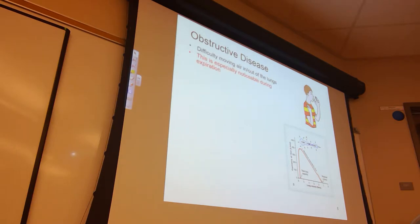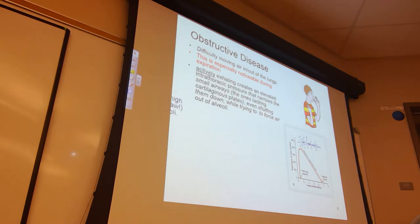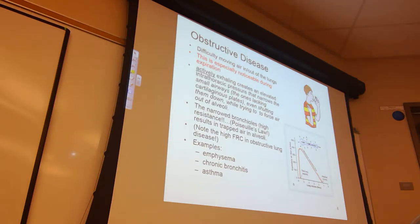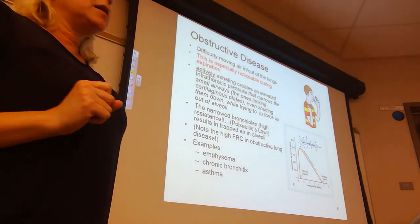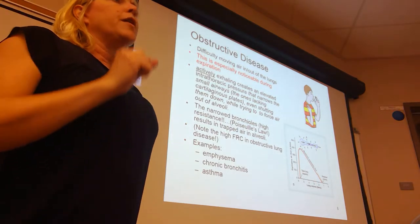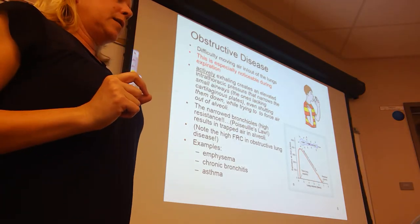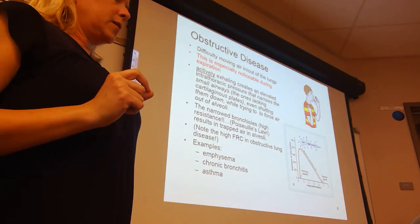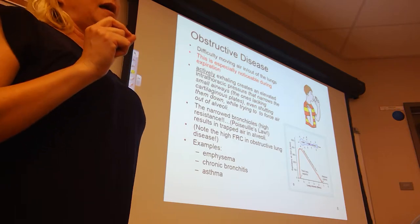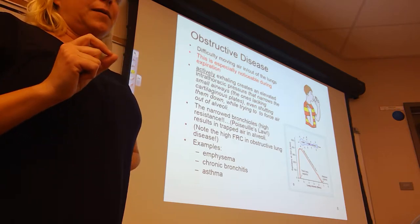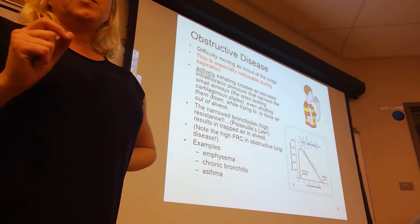When you have an asthma attack, we have a problem getting air in and out of our lungs — we are struggling with both. But when we are actively having an attack, there is one part of our breathing cycle we work at the most, and that's exhale.